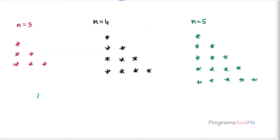So in our program, input is the number of rows and output is this pattern. When n is 3 — that is, the number of rows is 3 — we will get output like this. When n is 5, we will get output like this. Here n is just a variable I used to denote the number of rows. Alright, this is about the input and output of the program.